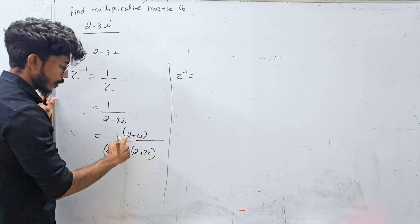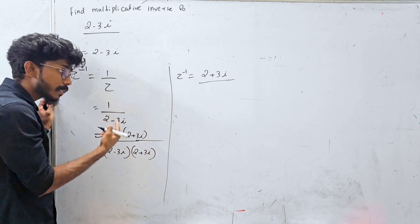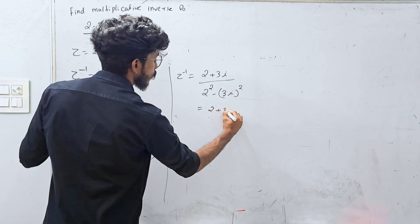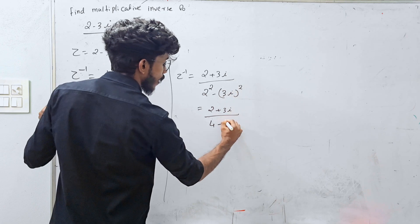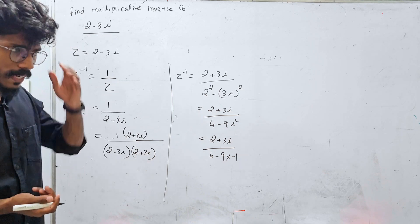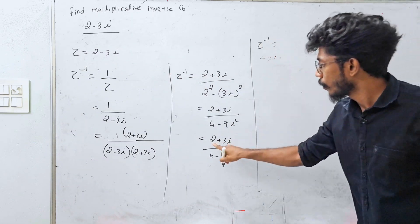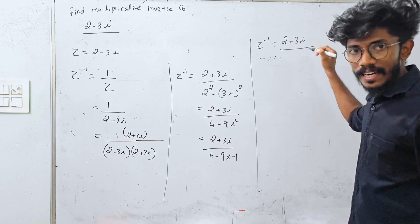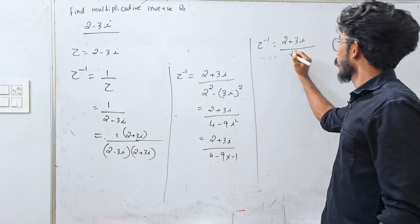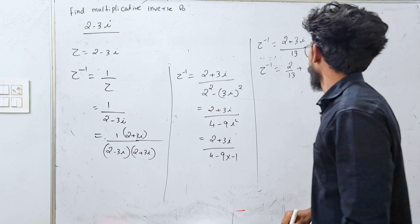So z inverse equals (2 plus 3i) divided by (2 minus 3i)(2 plus 3i). Using (a minus b)(a plus b) = a squared minus b squared: 2 squared minus (3i) squared = 4 minus 9 times i squared = 4 minus 9 times minus 1 = 4 plus 9 = 13. Therefore z inverse equals (2 plus 3i) divided by 13, which is 2/13 plus (3/13)i. This is the multiplicative inverse in a plus ib form.